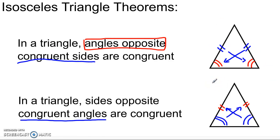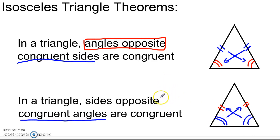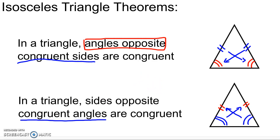So there you have your isosceles triangle theorems and a couple of proofs showing you one of each. They're essentially saying the same thing in different directions — this one goes from sides to angles, and this one goes from angles to sides. I'll put a link in the description to the actual copy of the two proofs and a blank page if you want to follow along. If you enjoyed this video, please hit the like button, subscribe, and keep coming back for more. Have a great day.